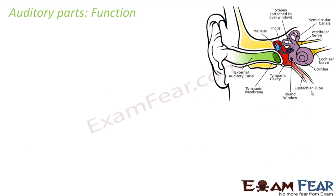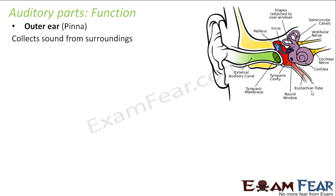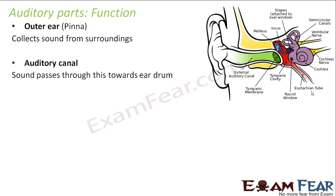Let us see the function of each auditory part. Starting with the outer ear — the pinna — its function is to collect sound from the surroundings. That is its only purpose: to collect sound and pass it inside. It passes sound through the auditory canal, which carries the sound towards the eardrum.